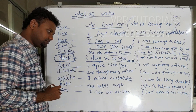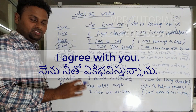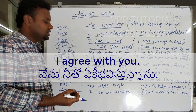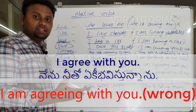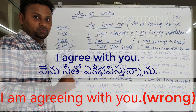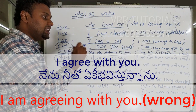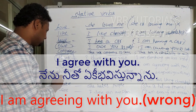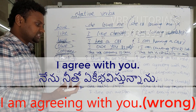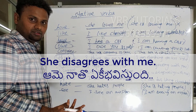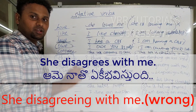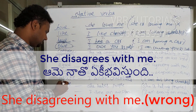Next: 'agree.' Though it is a continuous situation, just say: I agree with you. Don't say 'I am agreeing with you.' So: I agree with you. Same with 'disagree': she disagrees with me. We don't say 'she is disagreeing with me.' She disagrees with me — that is correct.